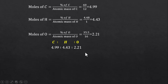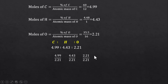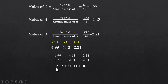As you can see, they are in fractions. Let's try to convert them into whole numbers. First, we take the smallest of the three and divide the rest by it. This comes out to be 2.25, 2, and 1. Again, we can see there is still a fraction in the case of carbon.